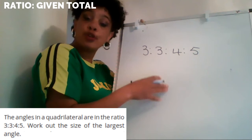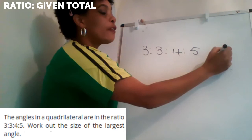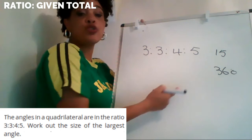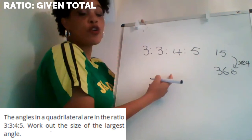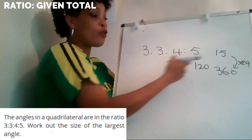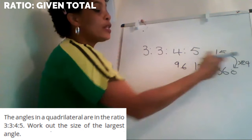So five and four is nine, nine and six is 15 — there are 15 parts, and 15 parts totals 360 degrees. What do I do to 15 to get to 360? Times it by 24. So 24 times five is 120, 24 times four is 96, and 24 times three is 72.